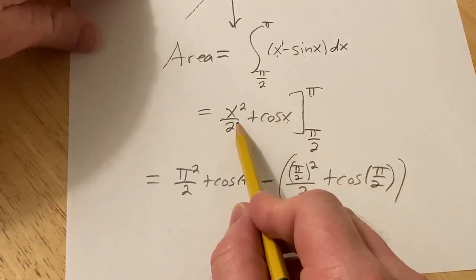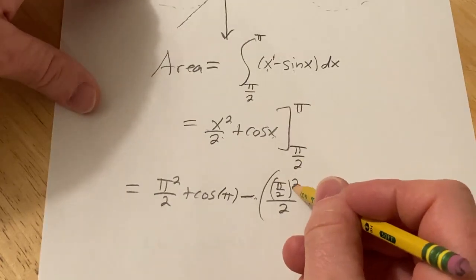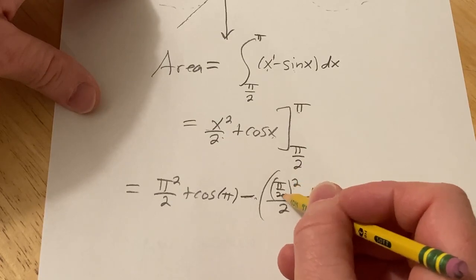The subtraction comes from the formula. So basically, you plug in pi, put a minus sign, and then you plug in pi over 2. This here is going to be pi squared over 4 over 2.